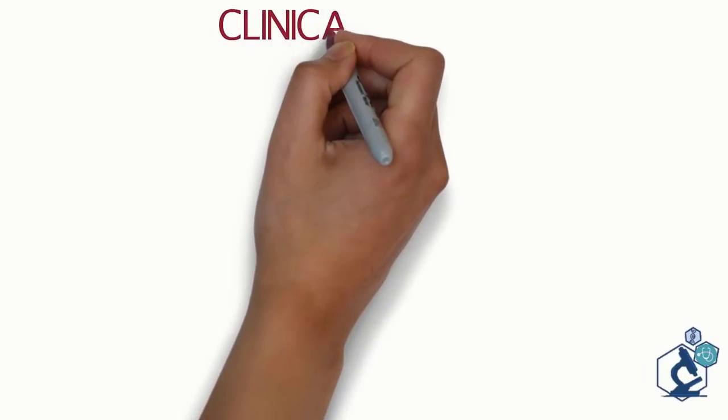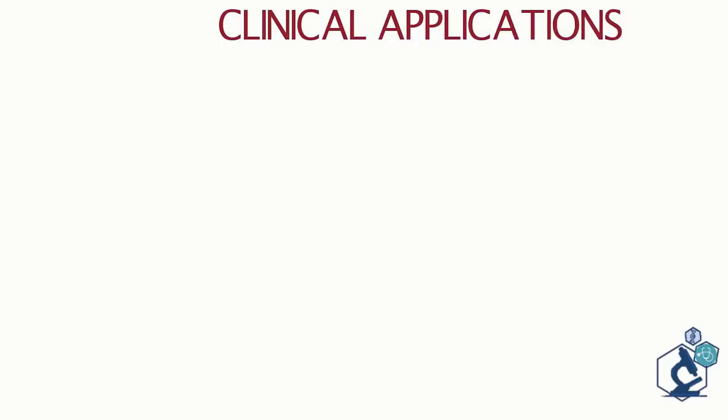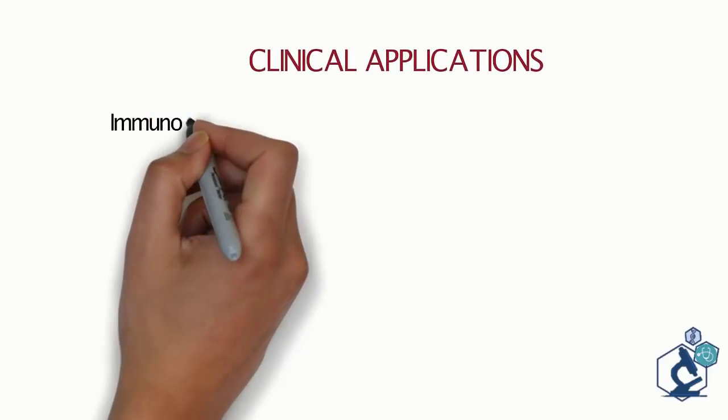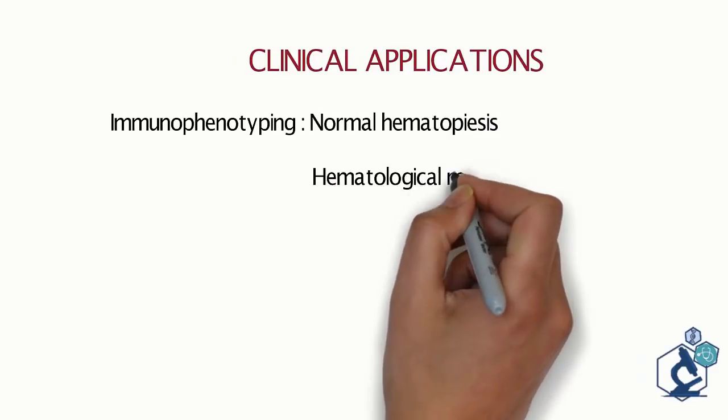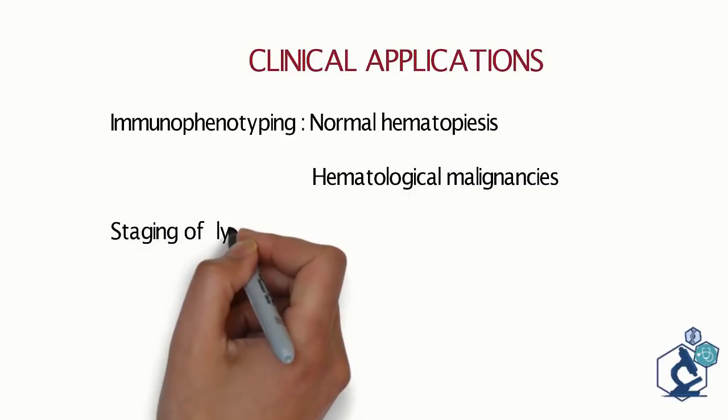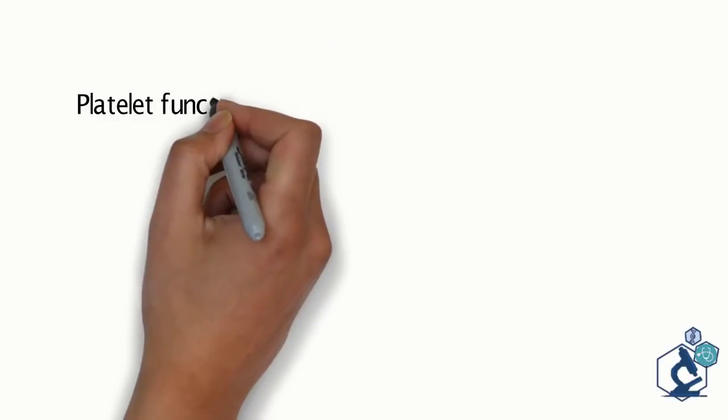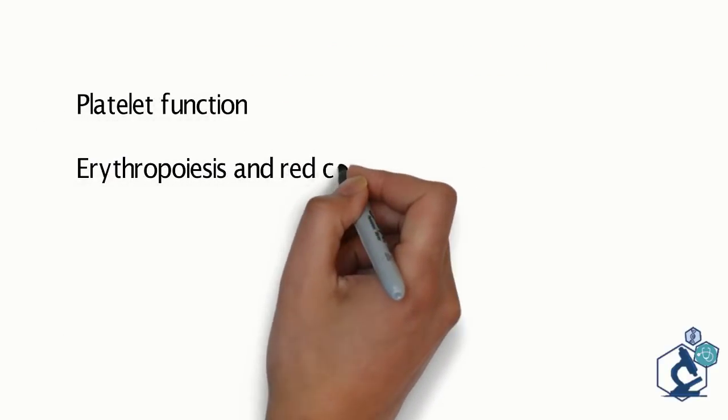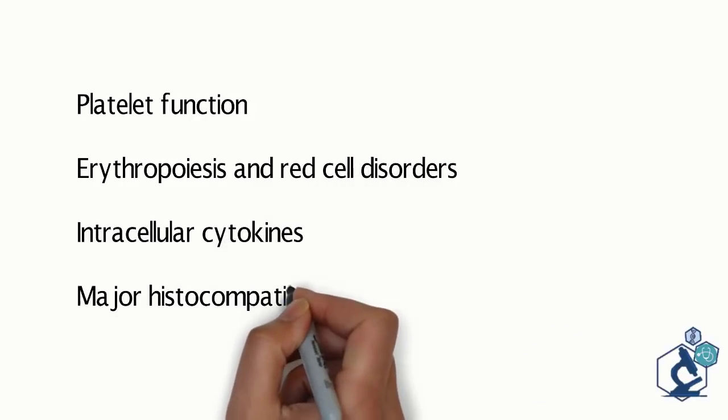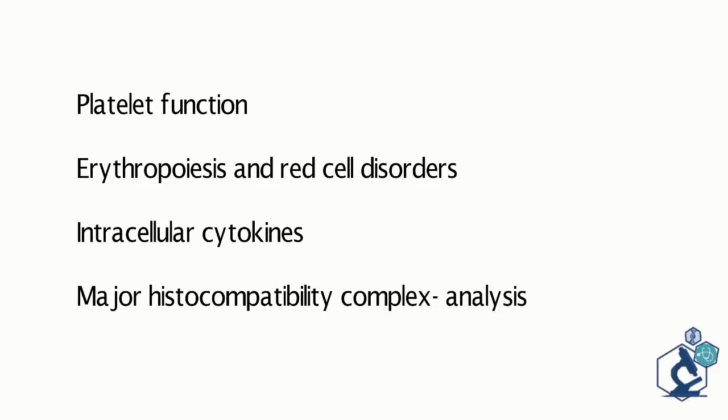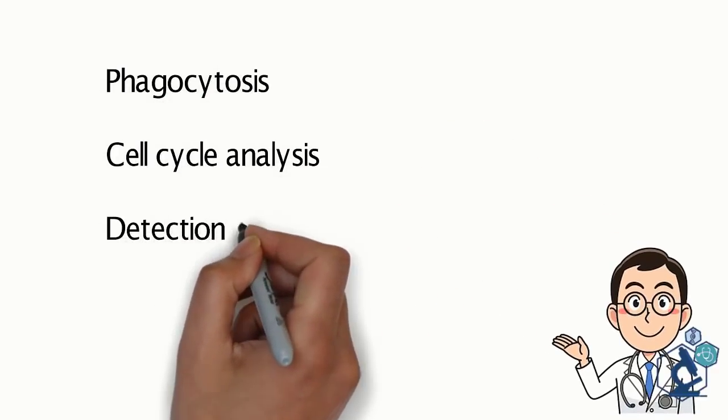Apart from diagnosing leukemias and hematological malignancies, there are few other clinical applications of flow cytometry, which include identifying normal hematopoiesis to define the immunophenotypic signature, staging of lymphomas, minimal residual disease detection, platelet function analysis, studying erythropoiesis and red cell disorders, study of intracellular cytokines, MHC complex analysis, analysis of phagocytosis, cell cycle and detection of apoptosis.